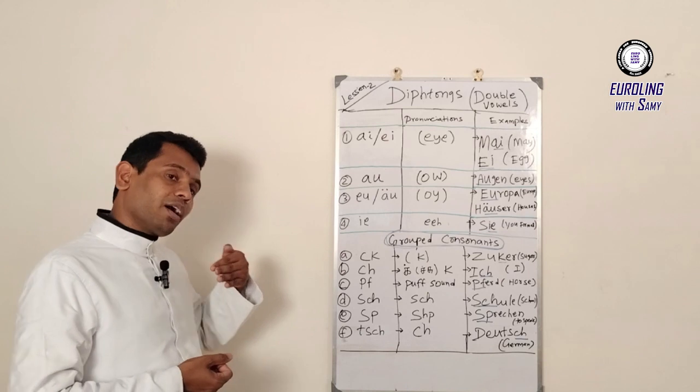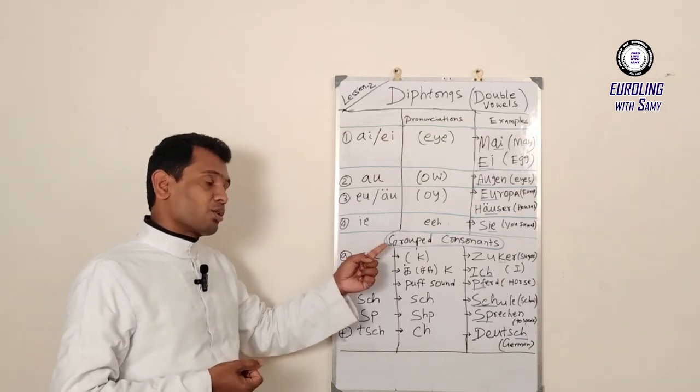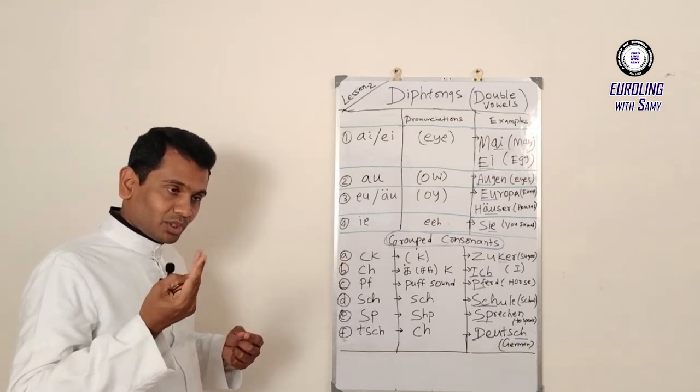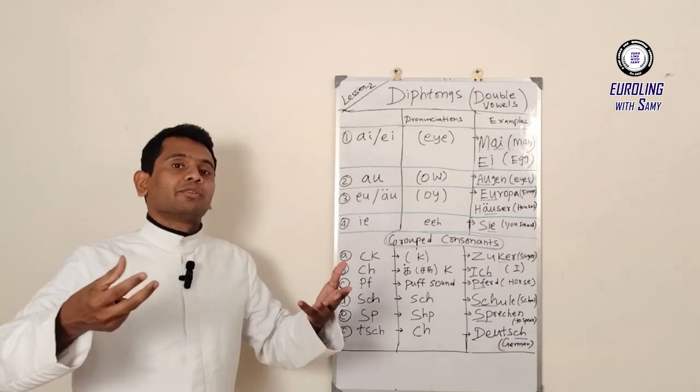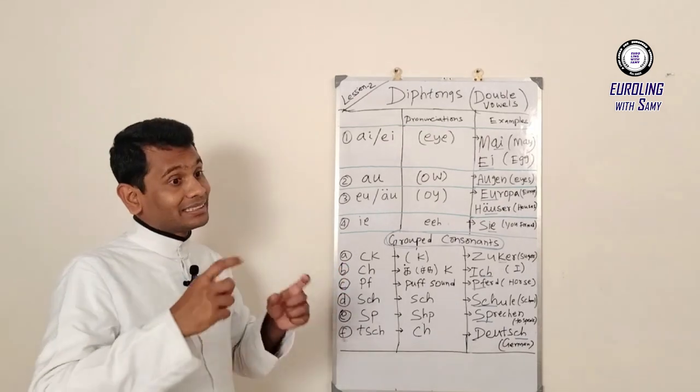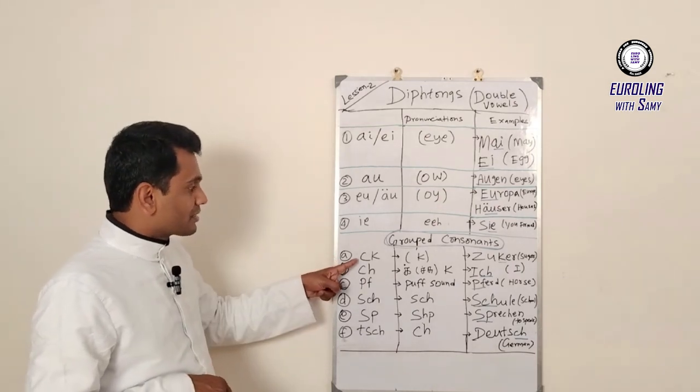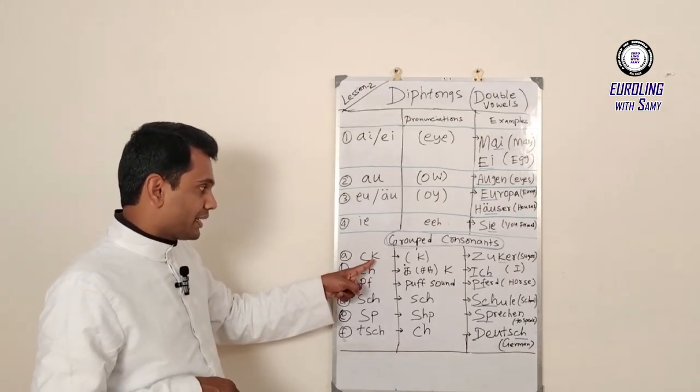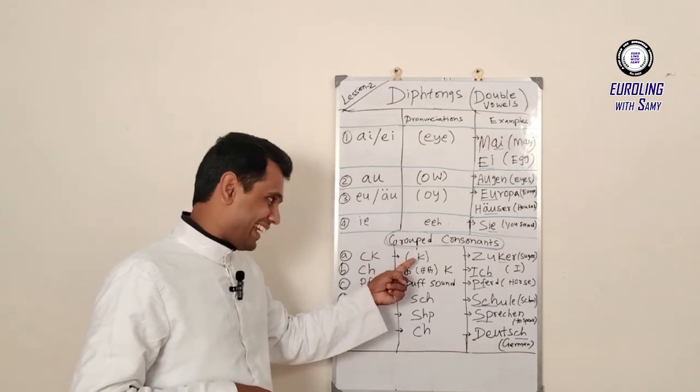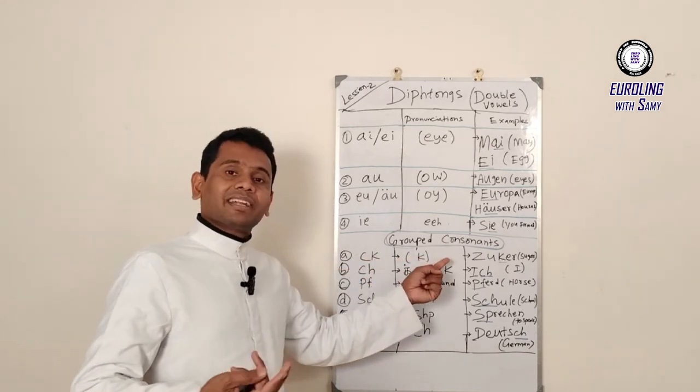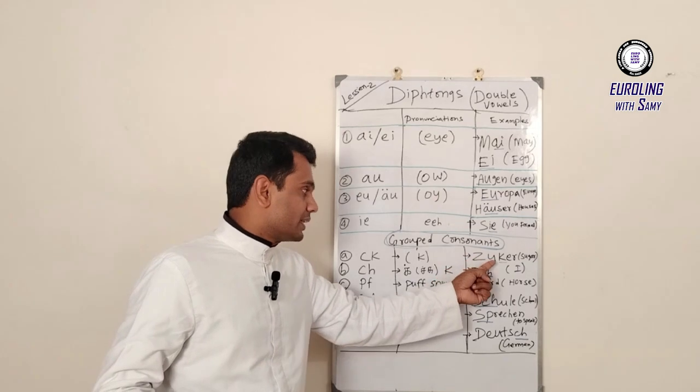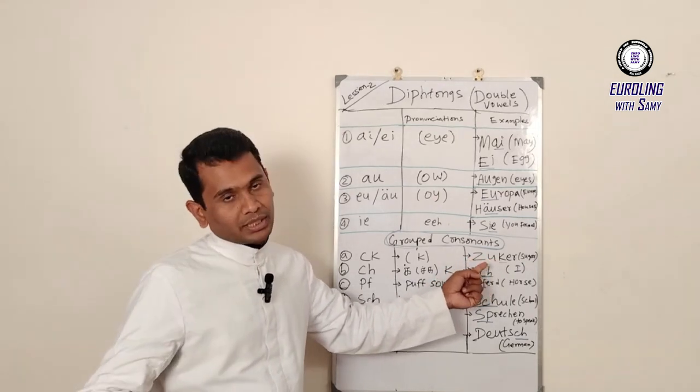Let's now move on to grouped consonants. That means double consonants together. They make a voice, they make a noise, they make a sound in the letter, in a word. For example, C-K. It is pronounced as K. Let's give an example. ZUCKER. ZUCKER, that means sugar.